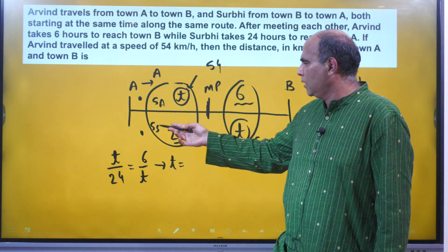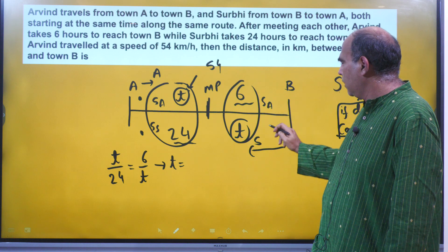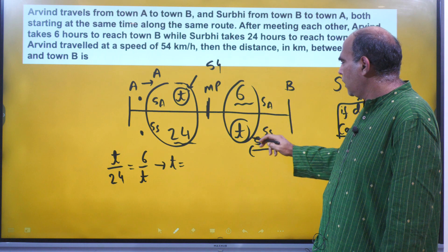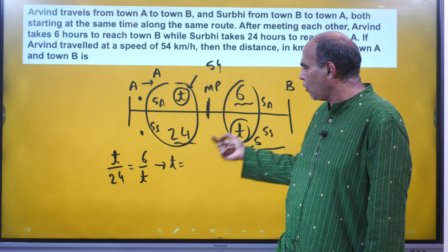Sa by Ss is going to be 24 by t, and Sa by Ss from here is going to be t by 6. So if I equate 24 by t to t by 6, or I equate t by 24 to 6 by t, I'll get the value of t is 12.